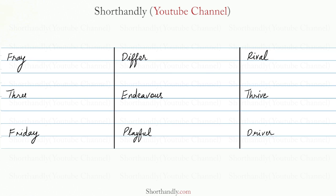The first word is Fray. Fray will be written like this. Next word is Free. Free will be written like this. Next word is Friday. Friday will be written like this. Next word is Differ.